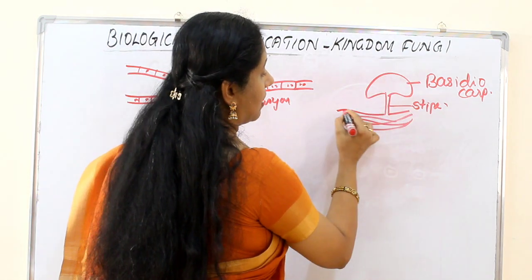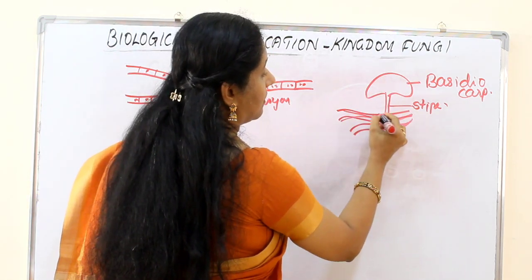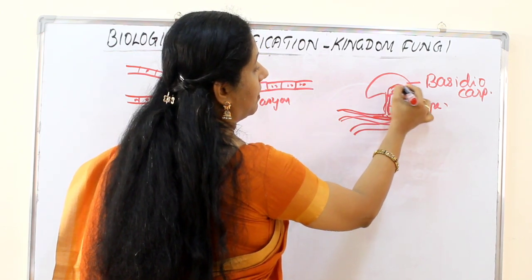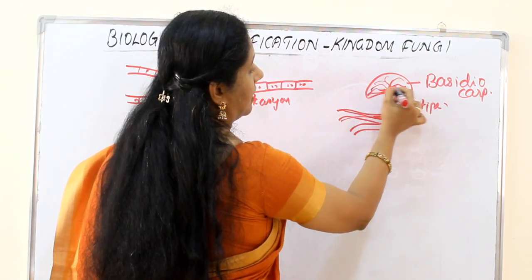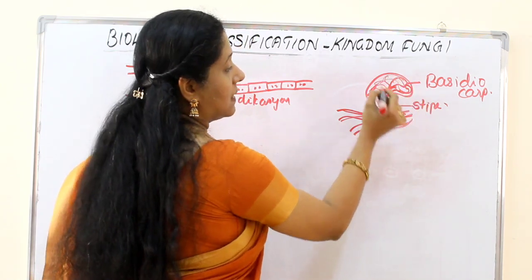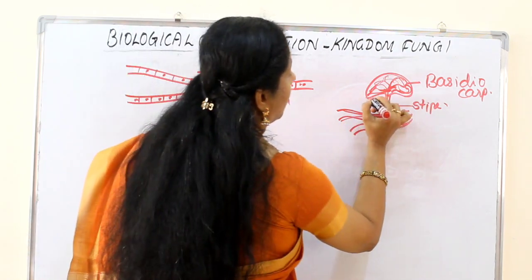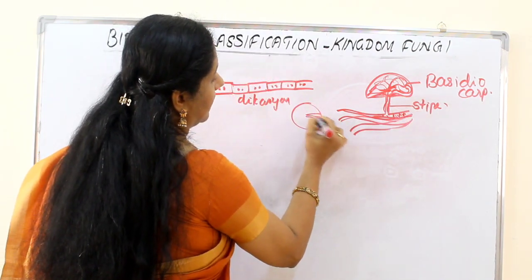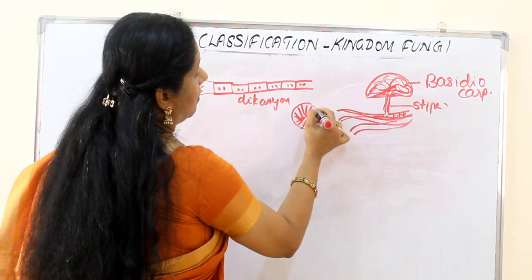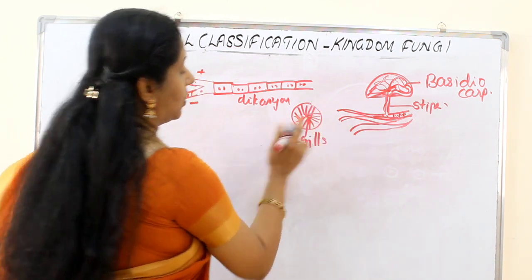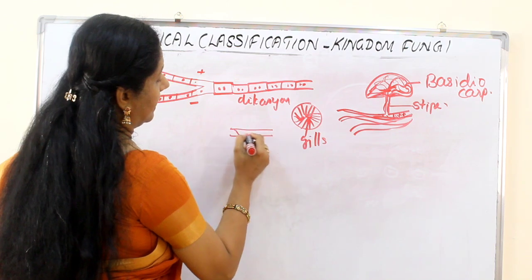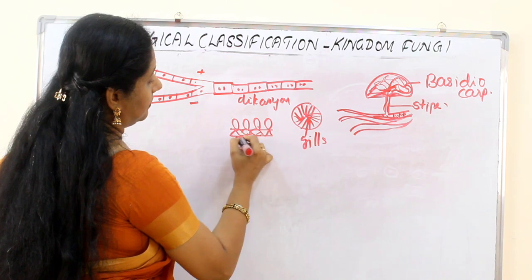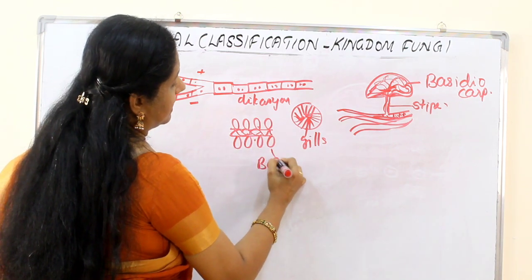The basidiocarp is actually formed by a tuft of hyphae that come together, and each one inside is dikaryon. At the bottom of the cap there are structures that, when viewed from behind, look like the gills of a fish — so these are also called gills. On both edges of each gill, structures called basidia are forming.